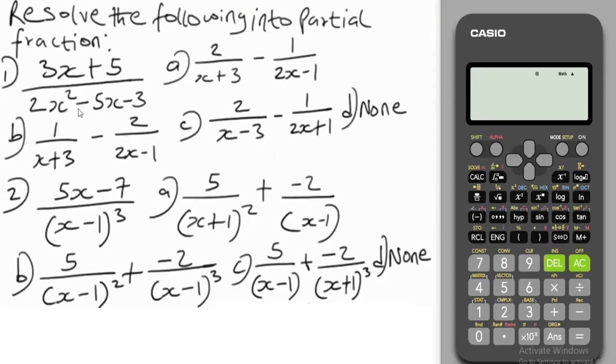All right, so question one, let's resolve it into partial fraction with the calculator. So using fraction, press OK. To bring out x, you press alpha and this button, x will come out. We have x plus 5 over 2x² minus 5x minus 3.